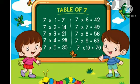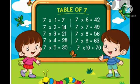Now let's start the table of seven. 7 ones are 7, 7 twos are 14, 7 threes are 21, 7 fours are 28, 7 fives are 35, 7 sixes are 42, 7 sevens are 49, 7 eights are 56, 7 nines are 63, 7 tens are 70.